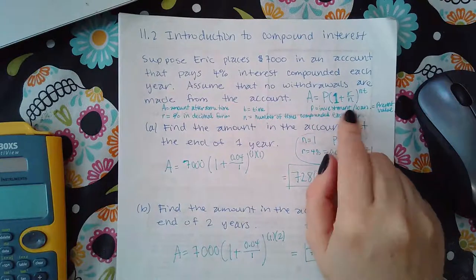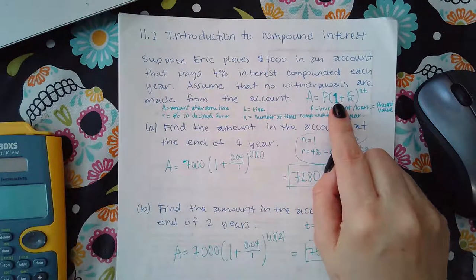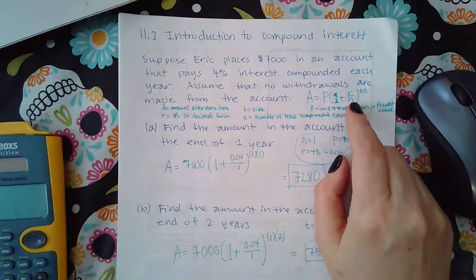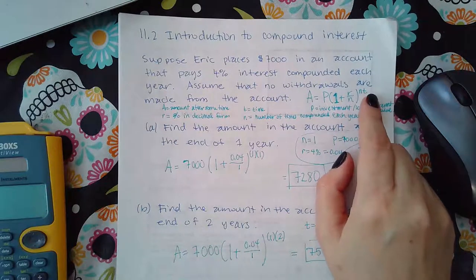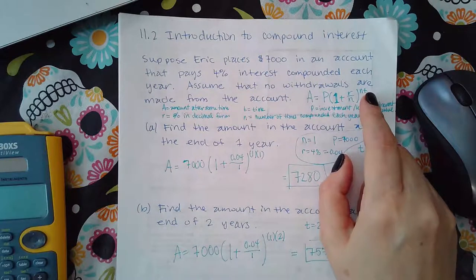And then you're going to have to use this formula. Okay, so that's A equals P times one plus r over n to the power of nt. So that value of n is going to be important because we're going to use it in two places.